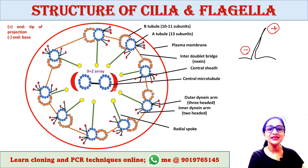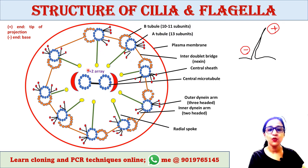The central tubules are enclosed by a central sheath. This central sheath is connected to the A tubules of the peripheral doublets by radial spokes — similar to spokes on a bicycle wheel. These radial spokes are anchored in the A tubules and project toward the central sheath.